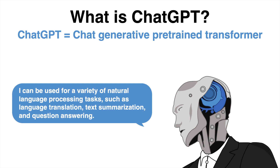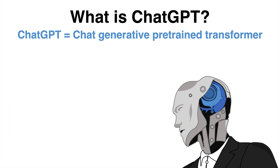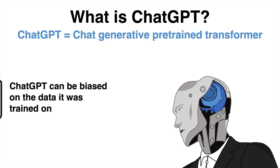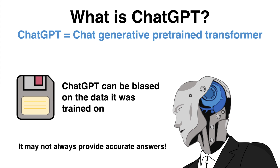The AI can also work with programming languages and generate code. However, ChatGPT is not without limitations. One limitation is that it can be biased based on the data it was trained on, so it may not always provide accurate or unbiased results. Additionally, it is not capable of any physical task.